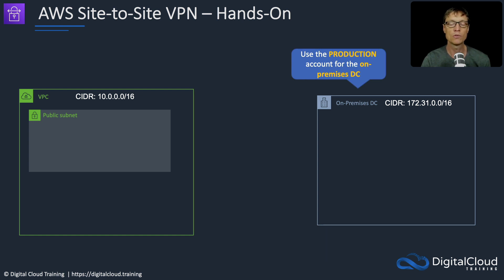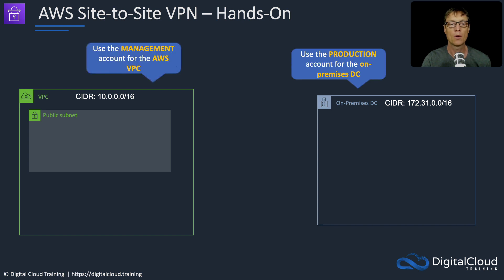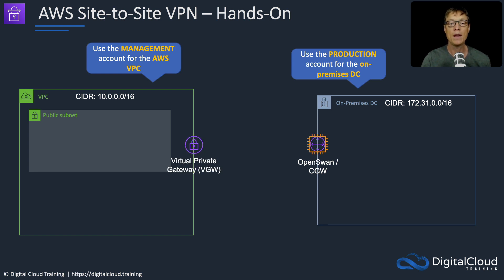We have two accounts set up for this course: one is our management account and one is our production account. We're going to use the production account for the on-premises DC and the management account for the AWS VPC. We then deploy an EC2 instance into the on-premises DC, and that's going to run a service called OpenSwan, which is an implementation of the IPsec protocol. The AWS VPN is an IPsec-based VPN — it's the protocol used for securing the channel and encrypting the data. So OpenSwan is essentially going to be the customer gateway, and we then have the virtual private gateway on the AWS side. Once we've got those two pieces, we can establish an encrypted VPN connection between the two data centers. This will use the public internet, because we're going to be using public endpoints for both the VGW and the OpenSwan customer gateway. We'll then need to update our route tables.